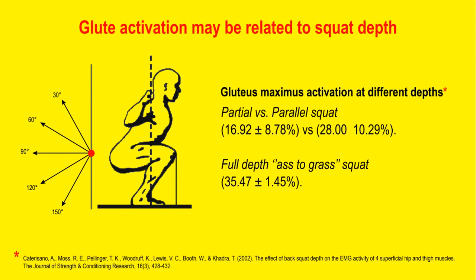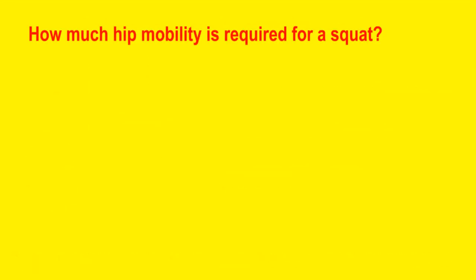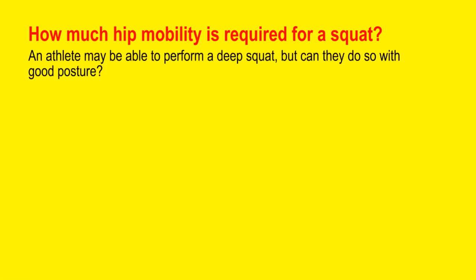Studies show that gluteus maximus activation is not very significantly different in partial versus parallel back squats, but in the full ass-to-grass squat, gluteus maximus activation is the highest. Since hip torque increases with hip flexion, maximal torque happens at the bottom of the squat — so it makes perfect sense that glute activation is higher in a deep squat. When considering how much hip mobility is required, a better question is: how much hip mobility is required for an individual athlete to perform a squat with good posture? An athlete might be able to perform a deep squat but not with correct posture — that's a whole other thing.